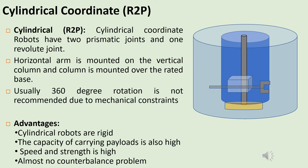Cylindrical coordinate robots have two prismatic joints and one rotary joint. The horizontal arm is mounted over a vertical column, and the column is mounted over a rotating base. Usually, 360-degree rotation is not recommended for cylindrical coordinate robots due to mechanical constraints.